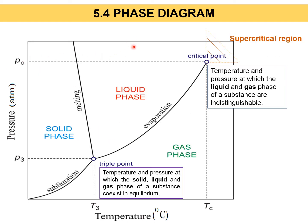We have just gone through the definition of phase diagram. Now, how do you sketch a phase diagram? A phase diagram is a graph showing three different phases: solid, liquid, and gas. For a graph, you need to know the y-axis and the x-axis.